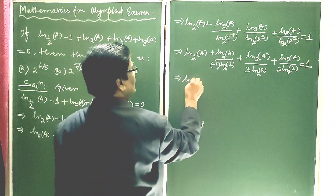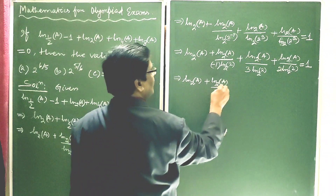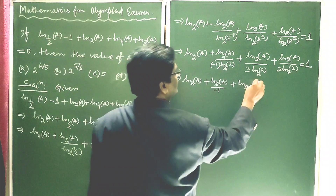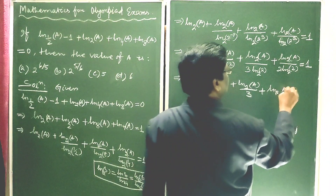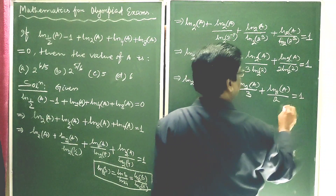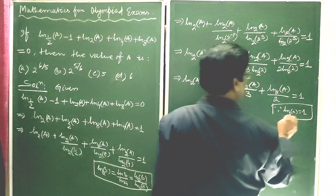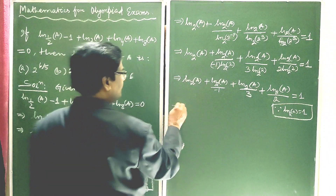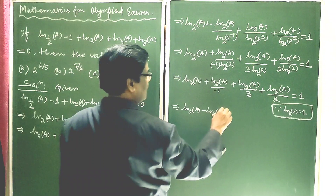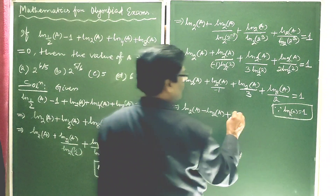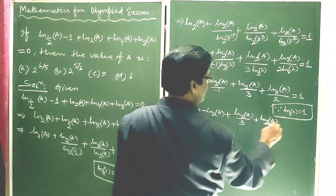This implies ln base 2 of A plus ln base 2 of A divided by (minus 1) plus ln base 2 of A divided by 3, plus ln base 2 of A divided by 2, is equal to 1. Since ln base 2 of 2 equals 1, and in place of A we are having 2, this simplifies: ln base 2 of A minus ln base 2 of A plus ln base 2 of A divided by 3, plus ln base 2 of A divided by 2, equals 1.